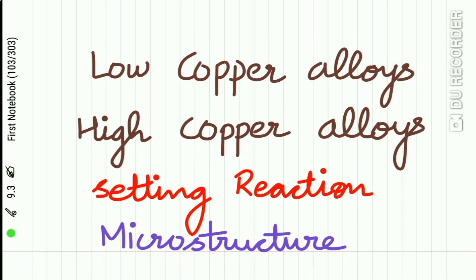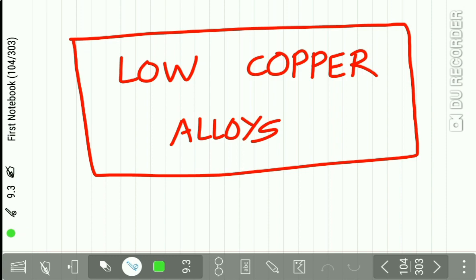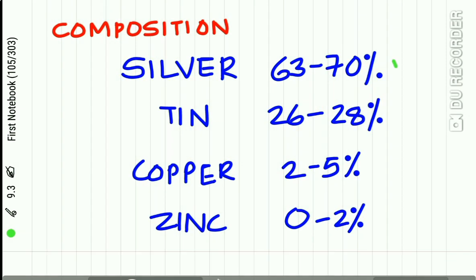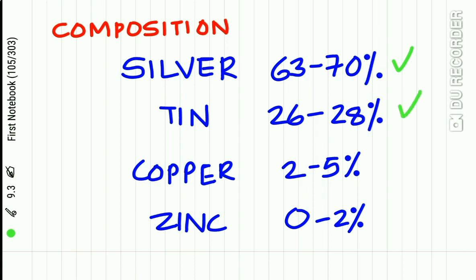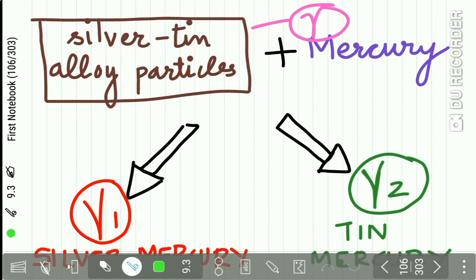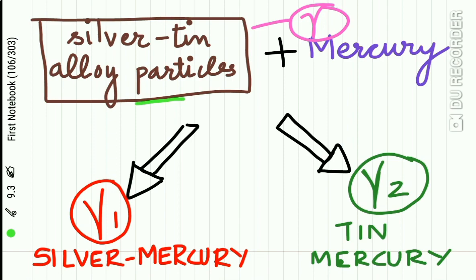Based on the copper content, alloys are classified as low copper alloys and high copper alloys. The low copper alloys have a composition of silver 63–70%, tin 26–28%, copper 2–5%, and zinc 0–2%. The silver-tin alloy particles of the low copper alloy are called the gamma phase. Remember: the silver-tin alloy particles are called the gamma phase.